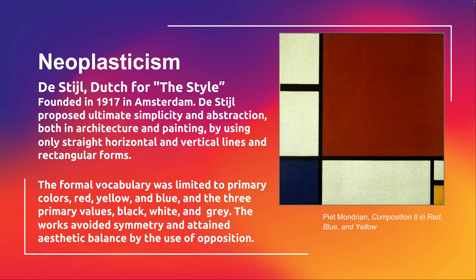Their formal vocabulary was limited to the primary colors — red, yellow, and blue — and three primary values: black, white, and gray. That was generally their color palette. They limited not only their shapes but their color palette. They tried to avoid symmetry but still attained balance.